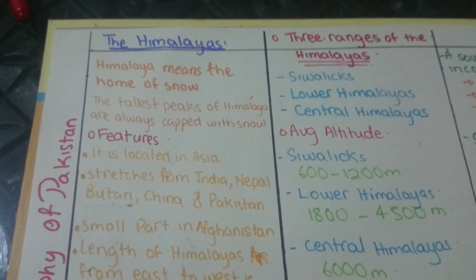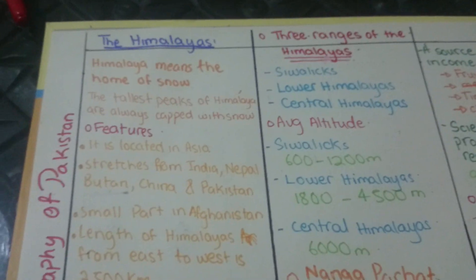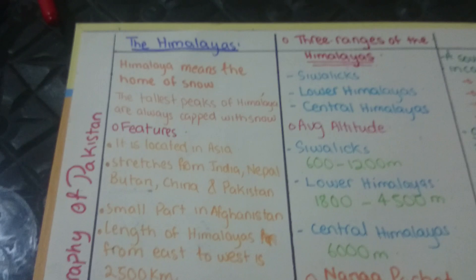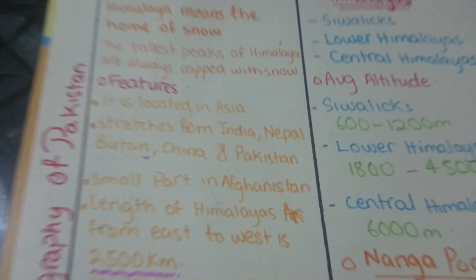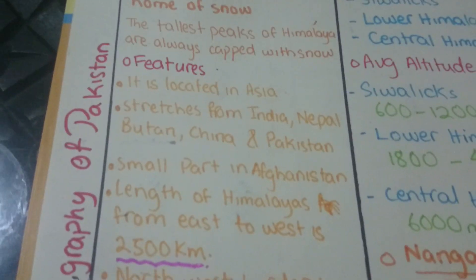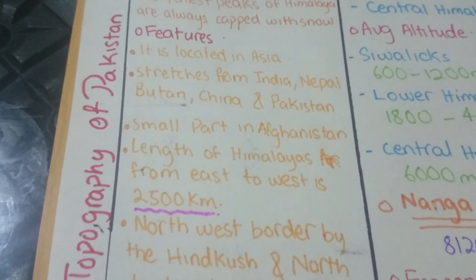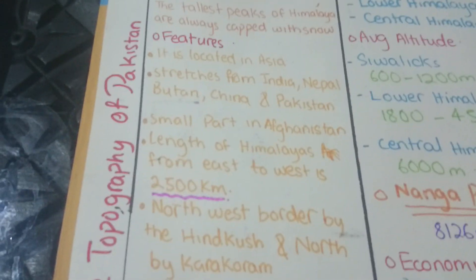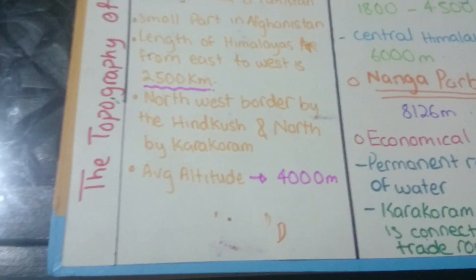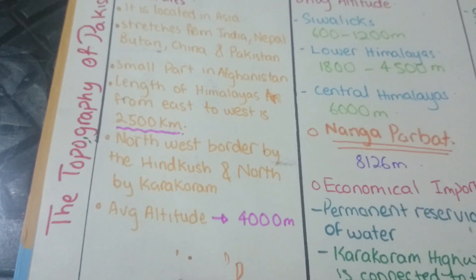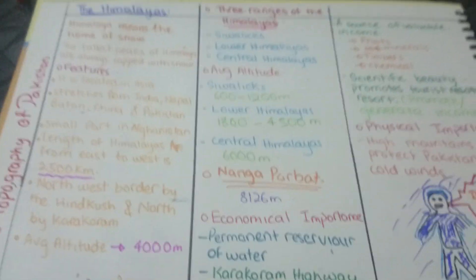The Himalayas — meaning 'home of snow' — have their tallest peak always capped with snow: Mount Everest. The Himalayas are located in Asia, stretching from Nepal, Bhutan, China, Pakistan, India, and small parts of Afghanistan. The length is approximately 2,500 kilometers. The northwest border is the Hindu Kush and the north is the Karakoram. Average altitude in Pakistan is 4,000 meters.